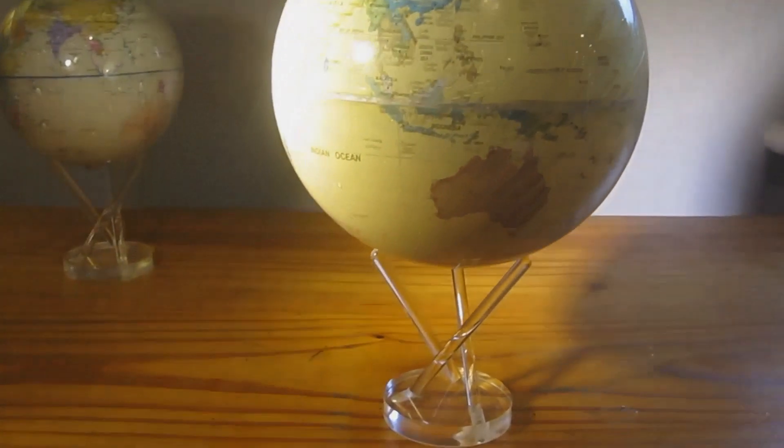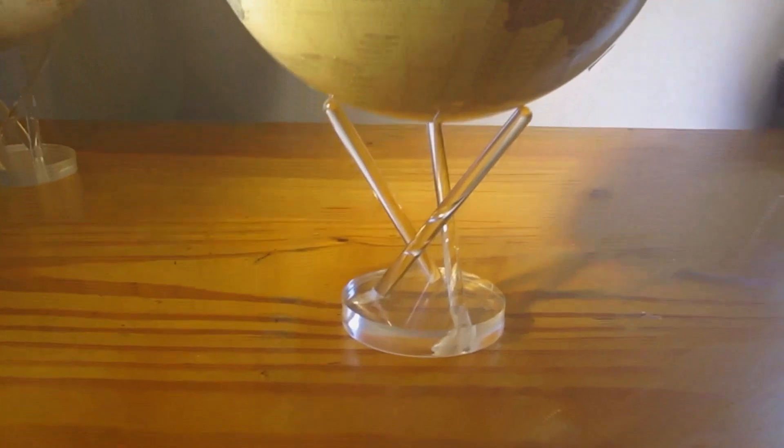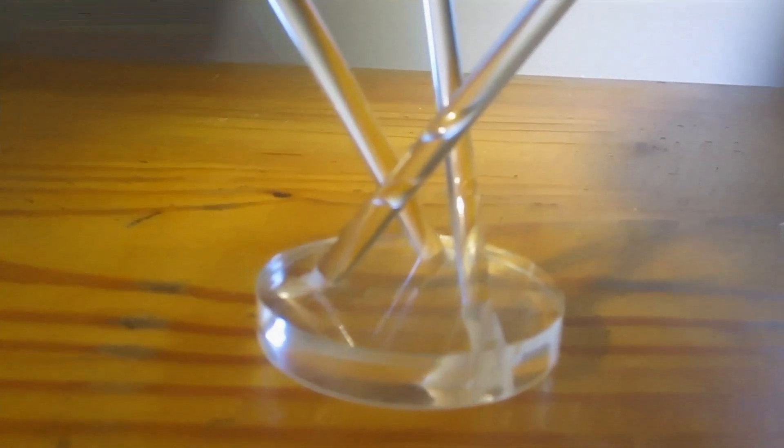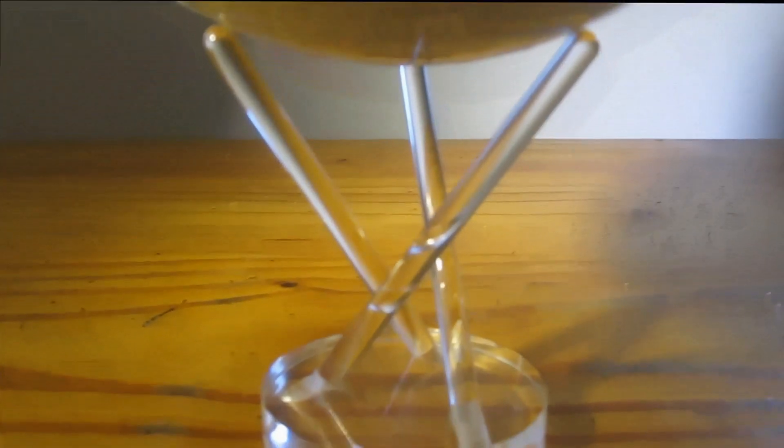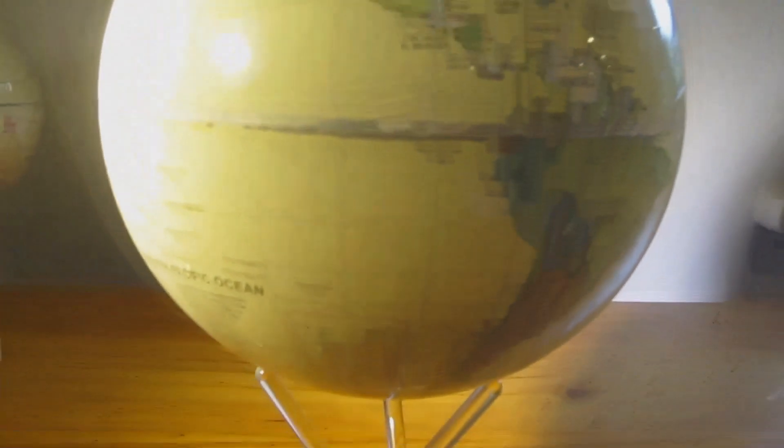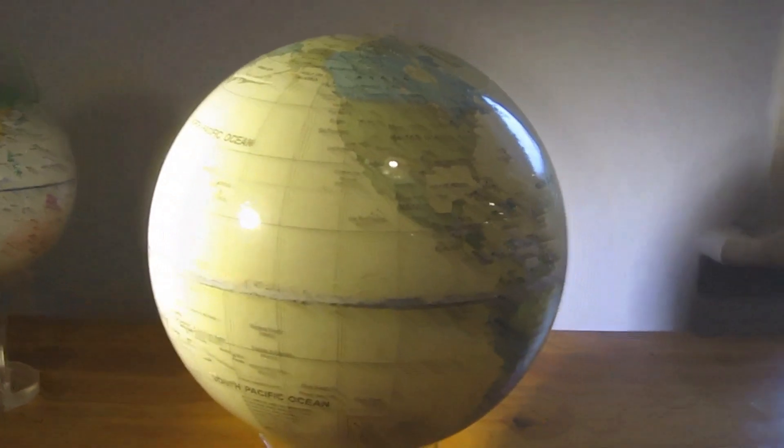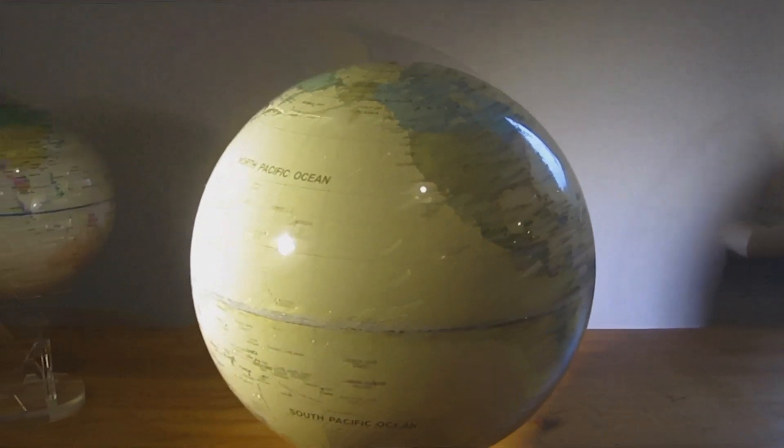This video is going to show how I've made an alternative MOVA globe equivalent. Now to do this it stands on a perspex base which has got three holes drilled in it and it accommodates some chemistry stirring rods which you may remember from your days at school. These are 10 centimeters long and they're angled such that they form a triangle.